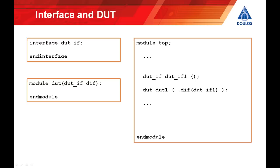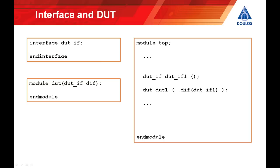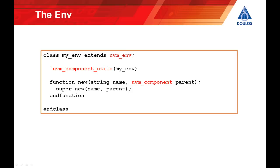So here we see the first part of the code. On the left we can see our interface and our module, both of which are empty in this Hello World example. On the right-hand side we can see the top-level module, which contains first of all an instance of our interface, then an instance of the design under test where you can see the interface port of the design under test connected to the interface instance. Then we move over to the first class in the class-based verification environment, that is the env. We create our verification environment by writing our own class that extends uvm_env. On these slides I've highlighted all of the features taken from the UVM library itself in red. uvm_env is a class provided by the UVM base class library, and we're creating our own environment by extending that uvm_env base class.